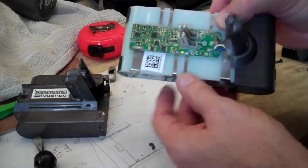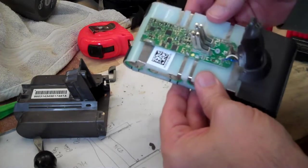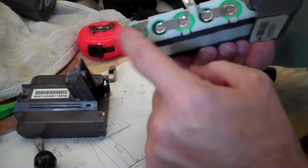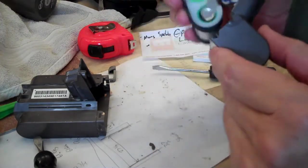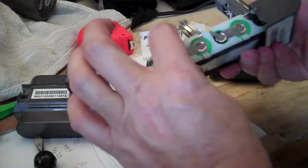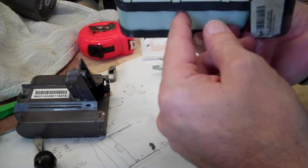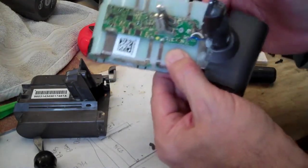So you can see they have a moderately complicated BMS system here and it has one, two, three, four, five, six, looks like 18650 cells and some pretty heavy-duty plastic protection here. So you're going to need six 18650 cells to replace this.